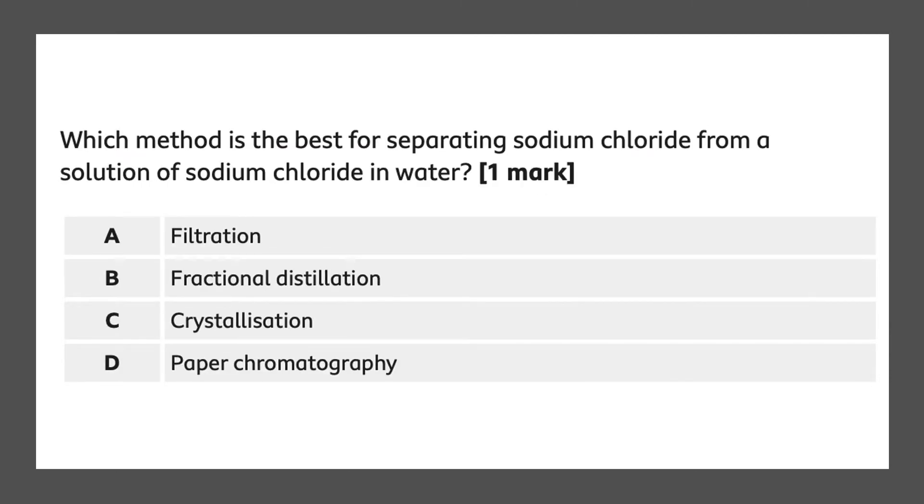Which method is the best for separating sodium chloride from a solution of sodium chloride in water? A, filtration. B, fractional distillation. C, crystallization. D, paper chromatography. The correct answer to this would be crystallization.